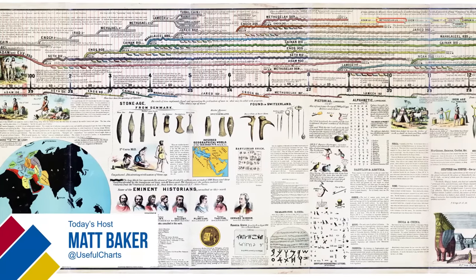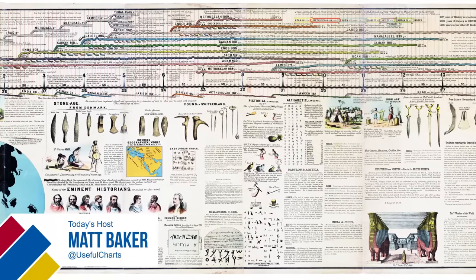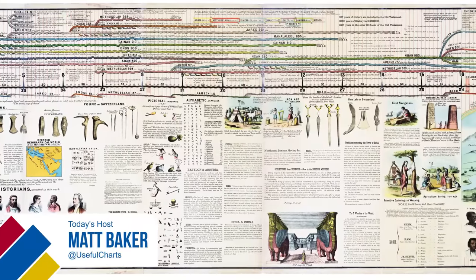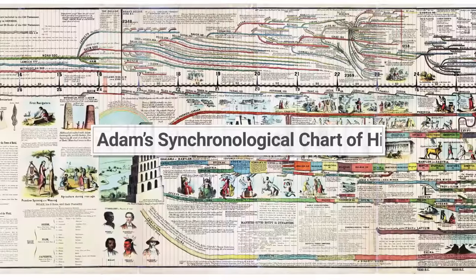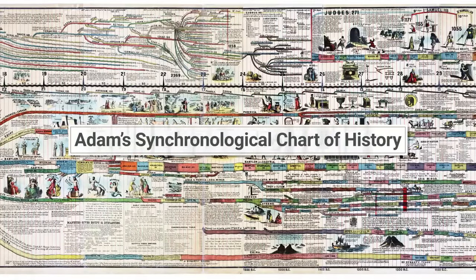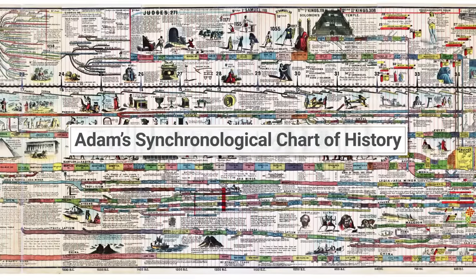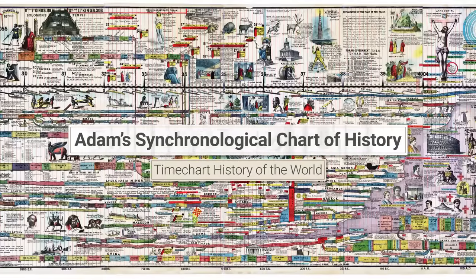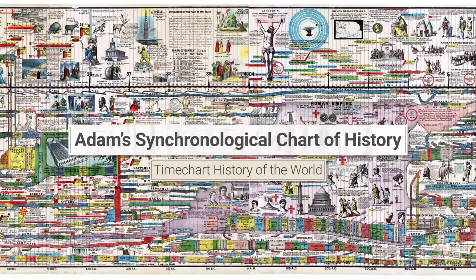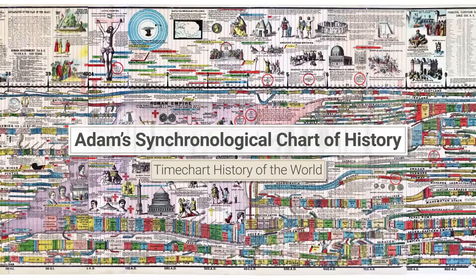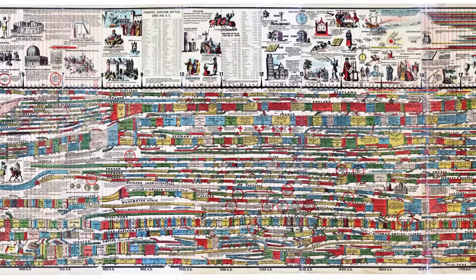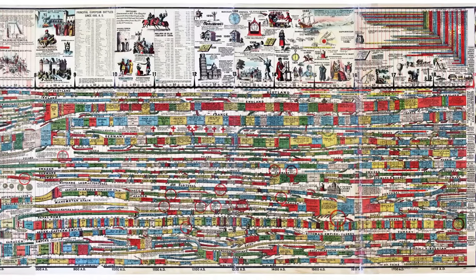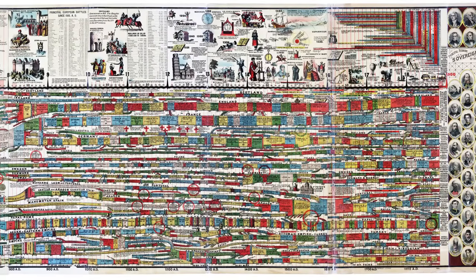Hi, this is Matt Baker. Today, I'm going to talk about the history of history timelines, and in particular this one, which is known as Adam's Synchronological Chart of History, although sometimes it's also called the Time Chart History of the World. The reason why I want to talk about this one is that although it was made over 150 years ago, it continues to be sold as an educational product, which it shouldn't be. So I'll be giving you my reasons for that opinion.